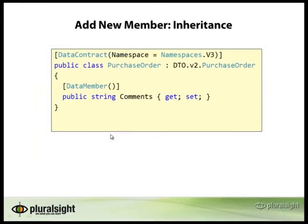You can also add new members via inheritance. To add a new member via inheritance, you create the new namespace — this will be V3 — and then add a comments item at the end of the purchase order. What's going to happen is the root of the object will look like a V2 purchase order, and the V3 enhancements will then appear in a new namespace that contains comments.